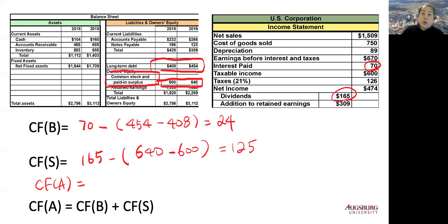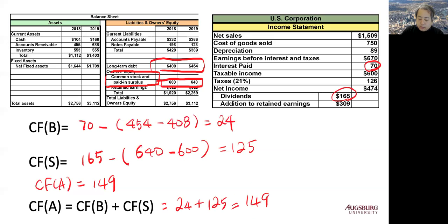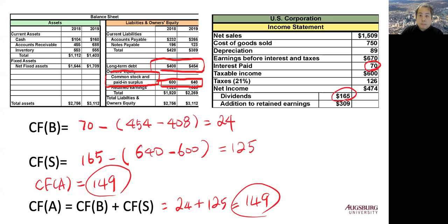In Part 2, we already calculated cash flow from assets, which is $149,000. Let's verify: $24,000 plus $125,000 equals $149,000. This identity rule — that cash flow from assets equals cash flow to creditors plus cash flow to stockholders — should always hold. If it does not, you need to go back and find your mistake. This financial cash flow identity rule must hold.